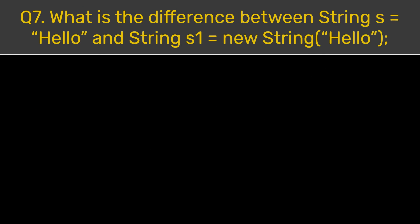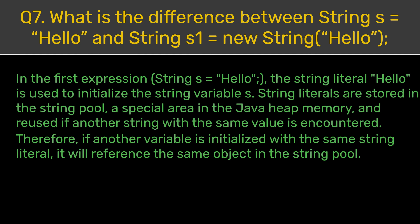Question 7. What is the difference between String s = "hello" and String s1 = new String("hello")? In the first expression, String s = "hello", the string literal "hello" is used to initialize the string variable s. String literals are stored in the string pool, a special area in the Java heap memory, and reused if another string with the same value is encountered. Therefore, if another variable is initialized with the same string literal, it will reference the same object in the string pool.